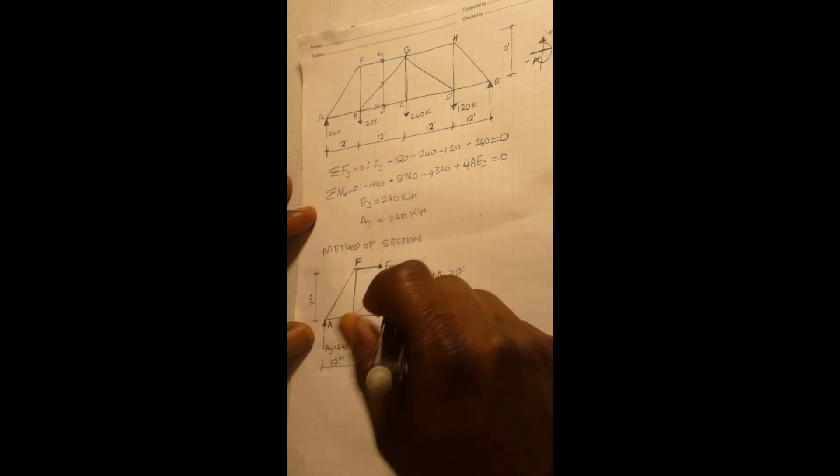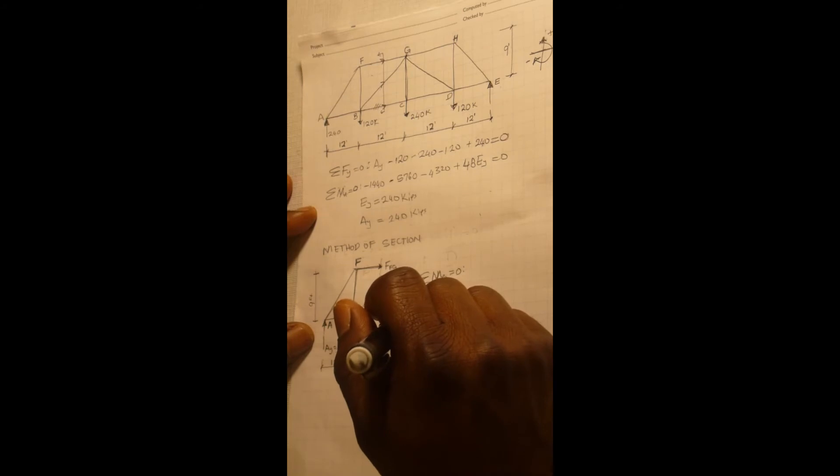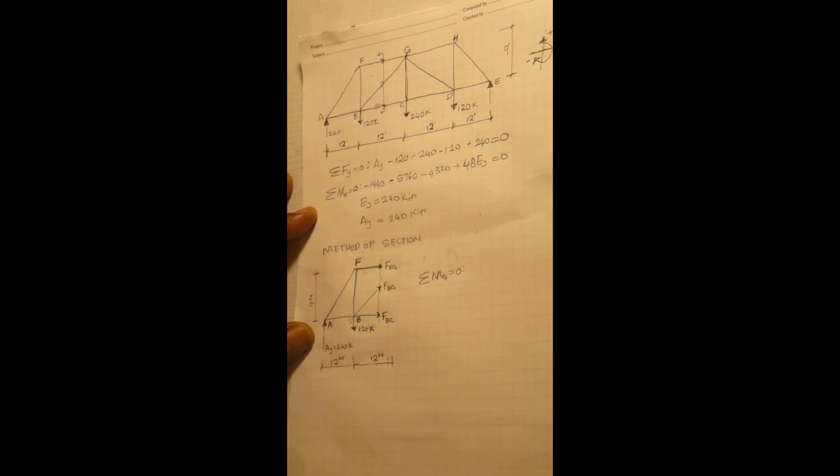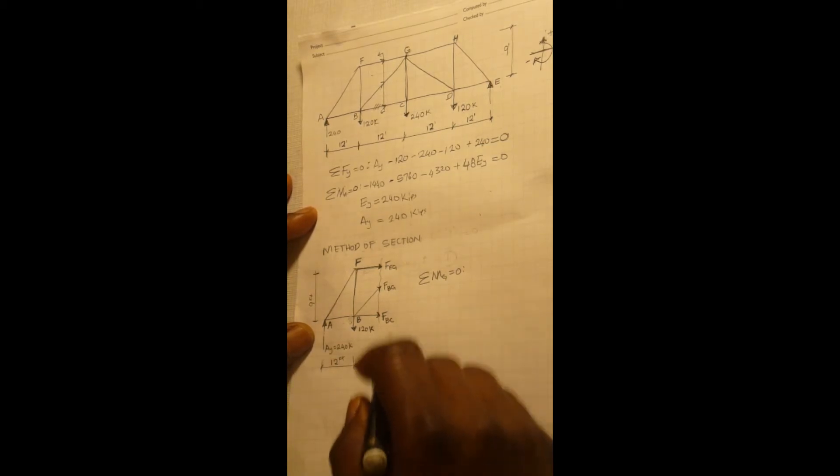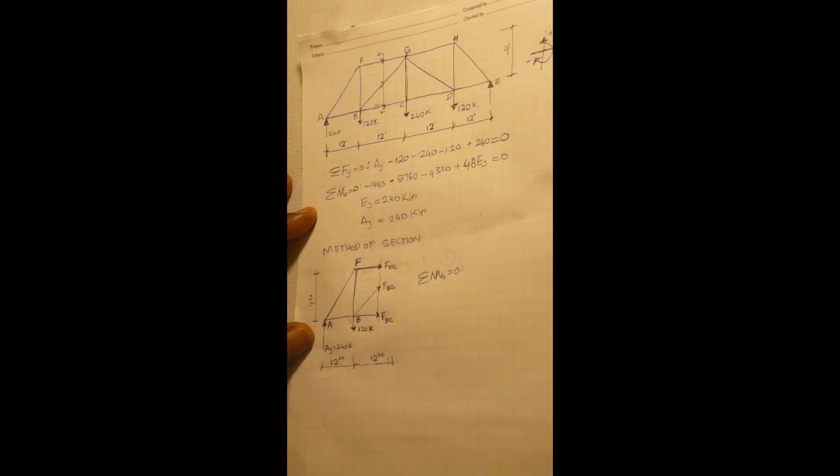creating a negative moment, a clockwise rotation. So 240 multiplied by 24 because this is joint G somewhere here. So 240 multiplied by 24,